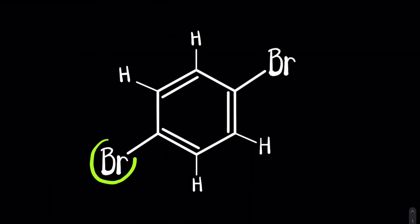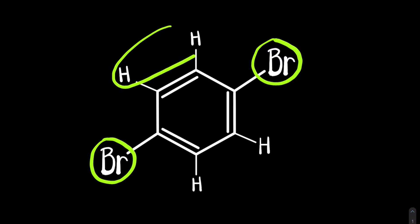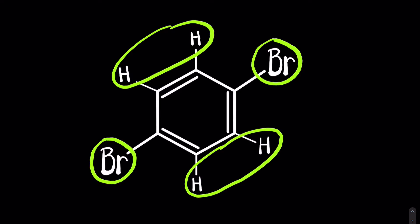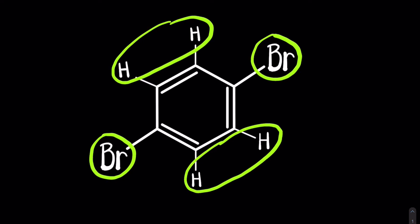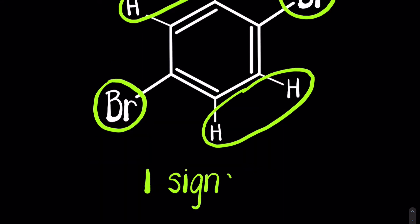This is a para molecule — the two bromines are para to one another on an aromatic benzene ring. The hydrogens off of the aromatic ring are going to be chemically equivalent to one another. Therefore, this molecule is going to give one signal due to the symmetry of the molecule. These hydrogens are each experiencing the same chemical environment because of those bromines that are para to one another. So, one signal.